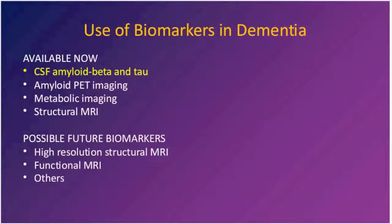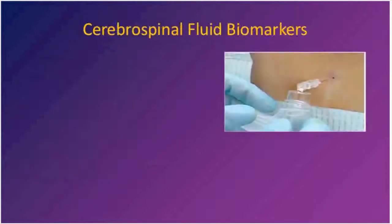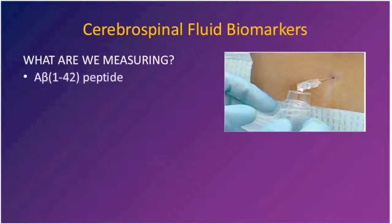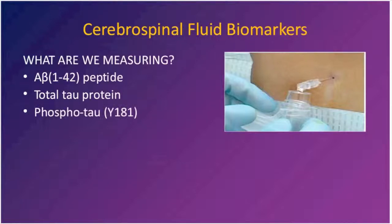Let's talk first about cerebral spinal fluid amyloid and tau. These markers are obtained through a traditional lumbar puncture, which many patients object to, but when you explain why spinal fluid is needed, patients who are anxious for objective data about their disease are often amenable to having this done. We're directly measuring the concentration of the A-beta 1-42 peptide, and also the concentration of total tau and phosphotau — tau phosphorylated at a particular residue that is thought to be a bit more specific for Alzheimer's disease.